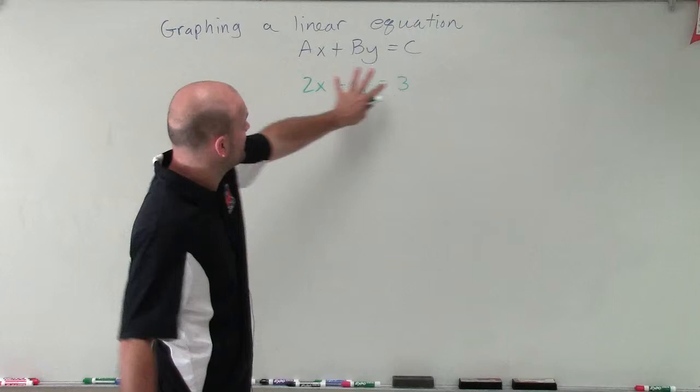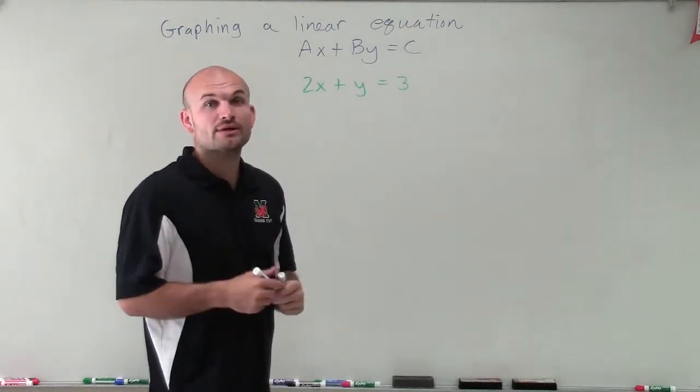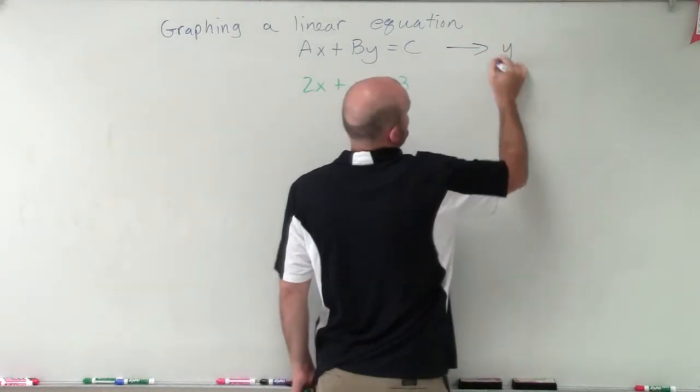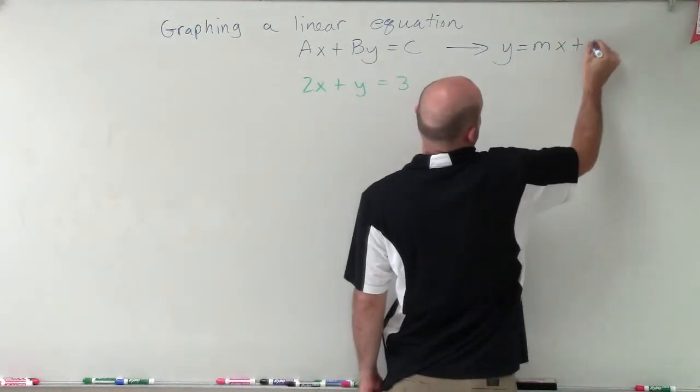So what we have is an equation that's in our standard form, and what we're going to want to do is now convert it to our slope-intercept form, which is y equals mx plus b.